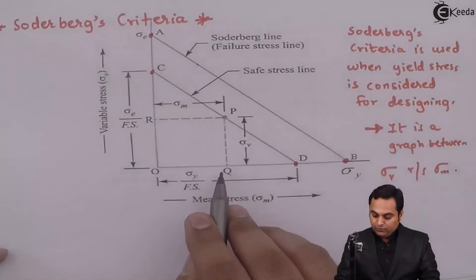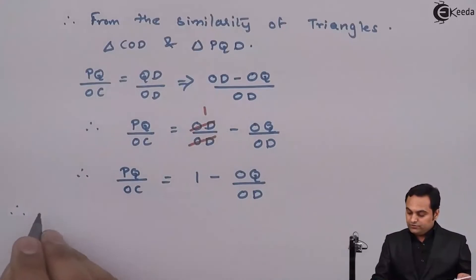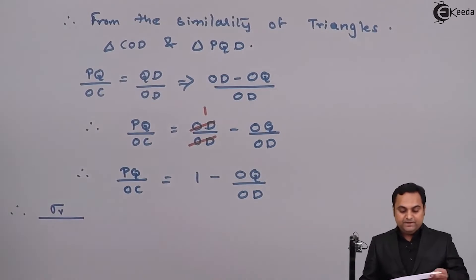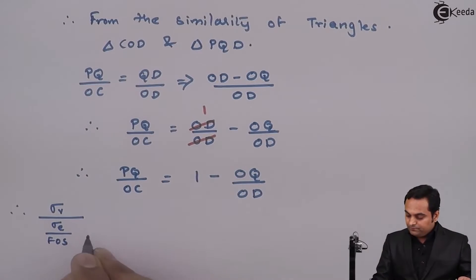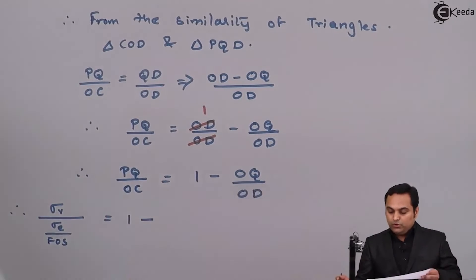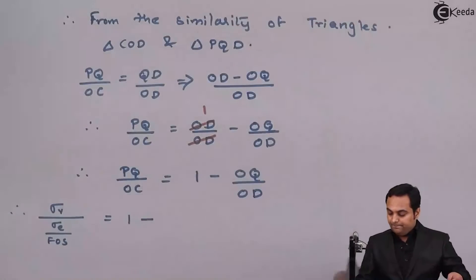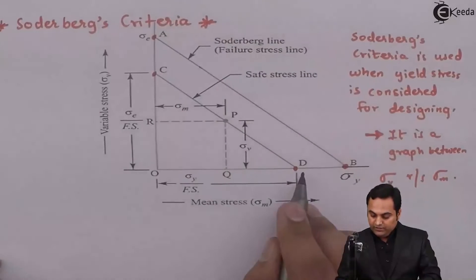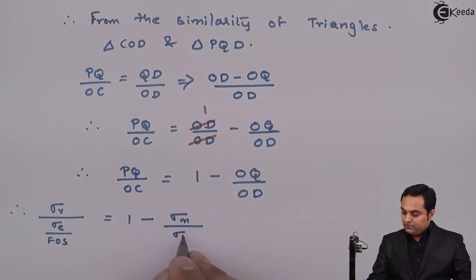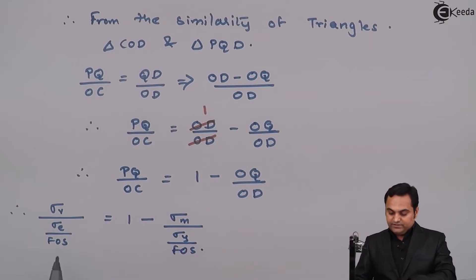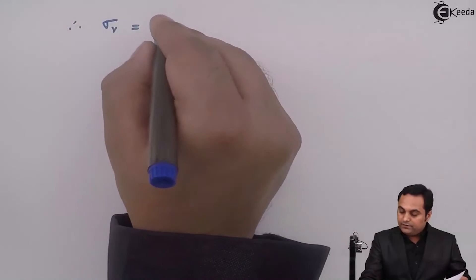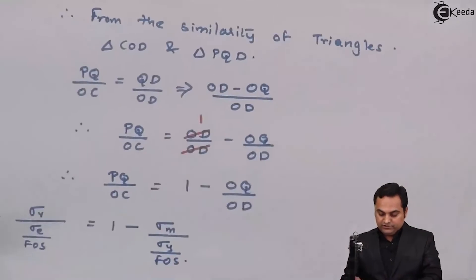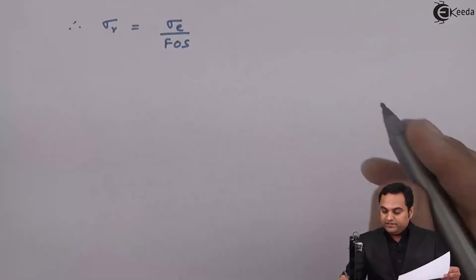From the diagram, PQ equals sigma_v (variable stress). OC equals sigma_e divided by factor of safety. This is equal to 1 minus OQ over OD, where OQ is sigma_m and OD is sigma_y divided by factor of safety. So: sigma_v divided by (sigma_e / FOS) equals 1 minus sigma_m divided by (sigma_y / FOS). We keep sigma_v on one side and multiply through.